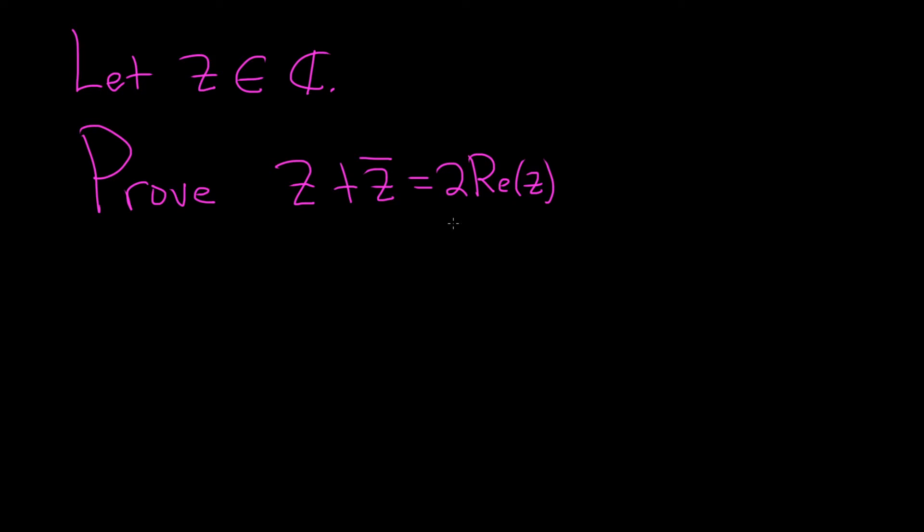So before we do the proof, let me just briefly recall what all of this means. So this set here, C, is the set of all complex numbers. So it's the set containing the elements that look like this, a plus bi, and then here a and b are real numbers. So like 2 plus 3i would be a complex number. 4 is a complex number because you can write 4 as 4 plus 0i, 2i, etc.